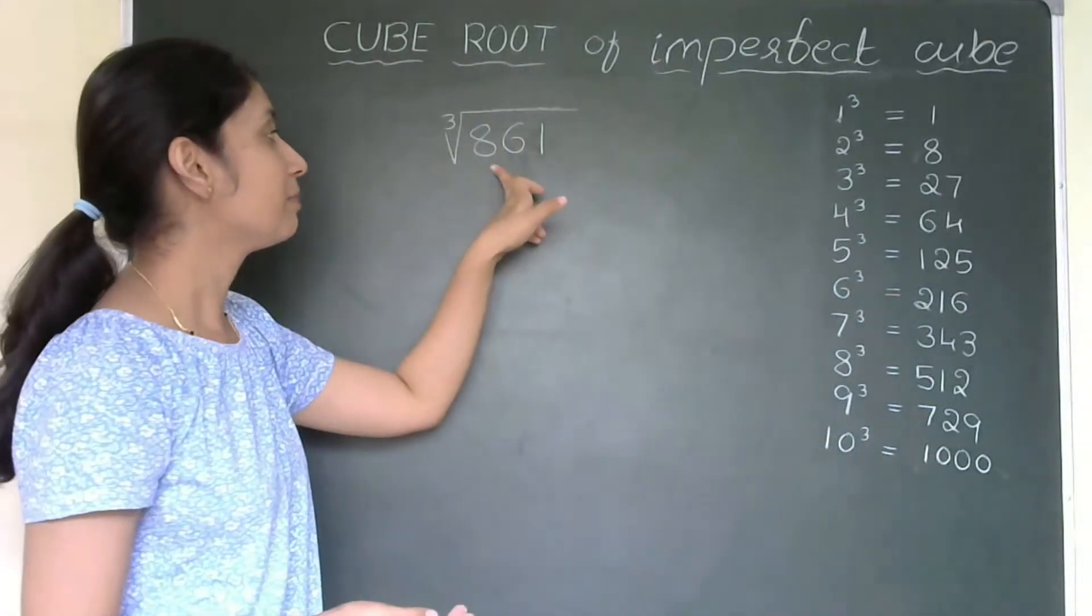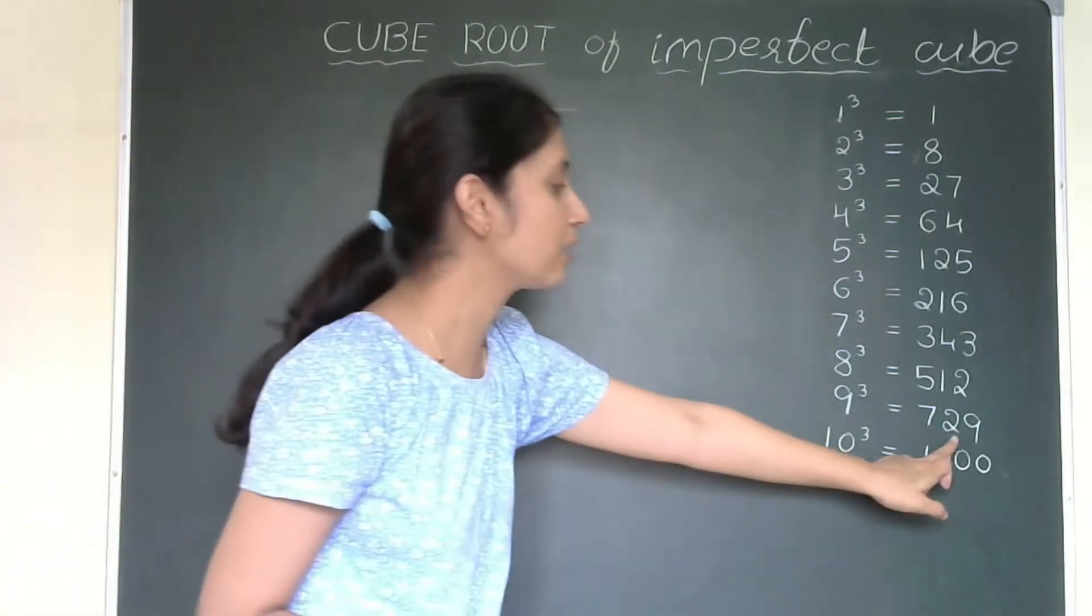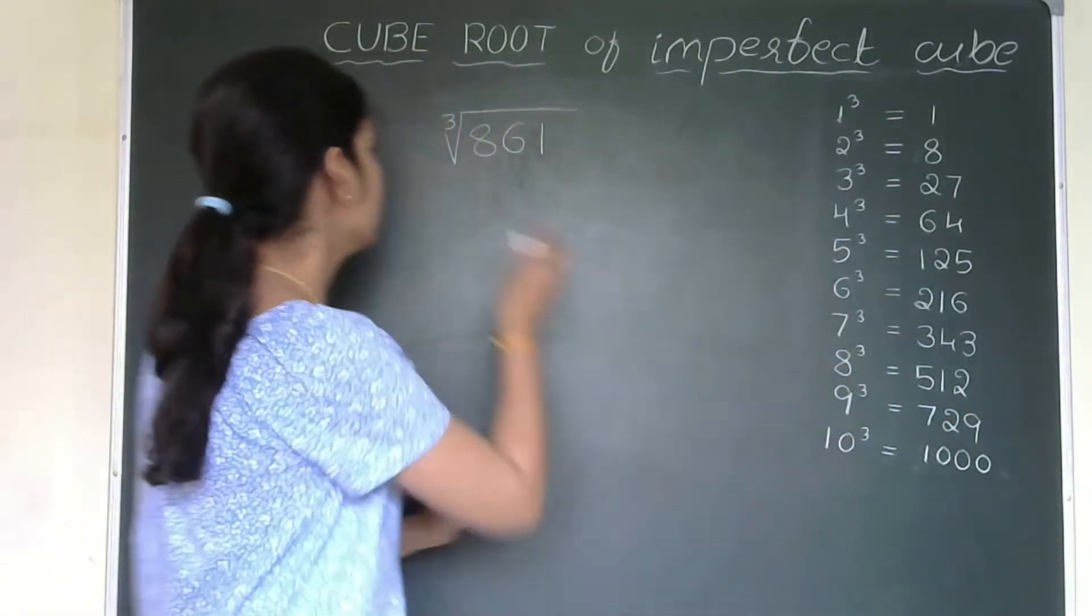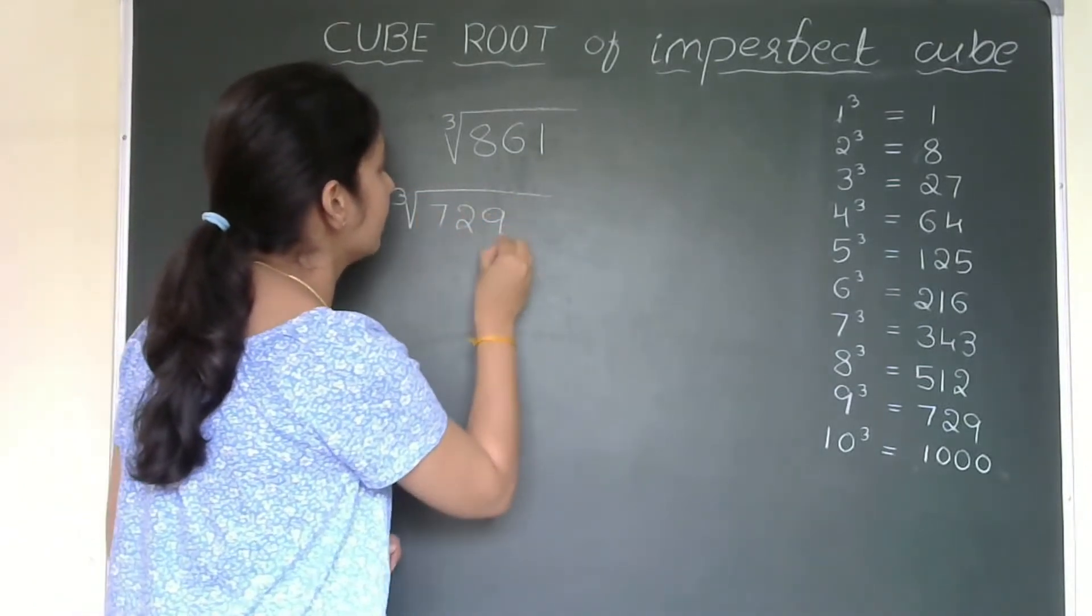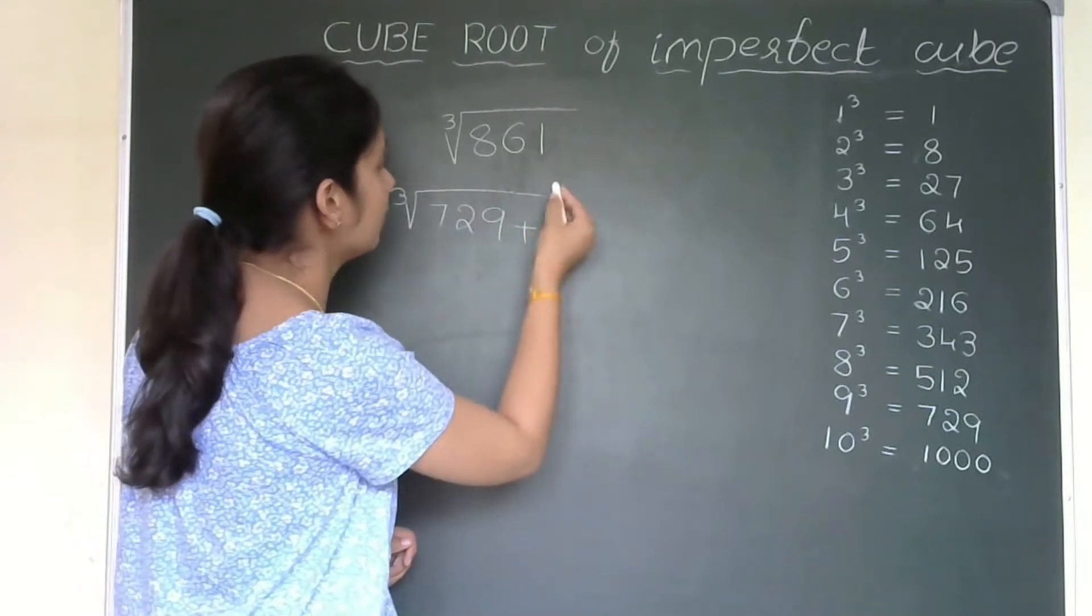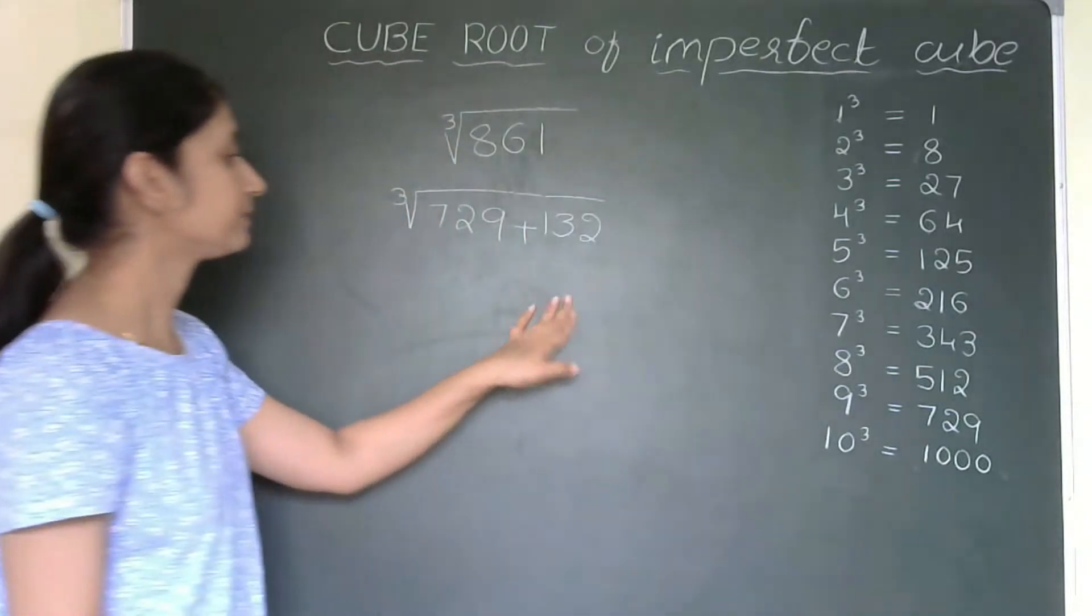It is 729 because I can't take 1000. Yes, I can take but it is much more than 861. So, what I will do? I will go for 729 only. So, how I can write 861? 729 plus 132. It becomes 132.